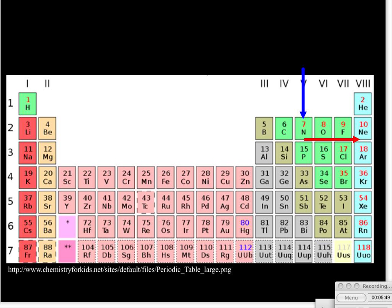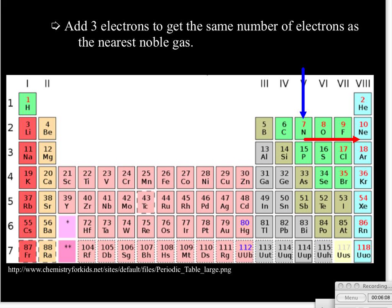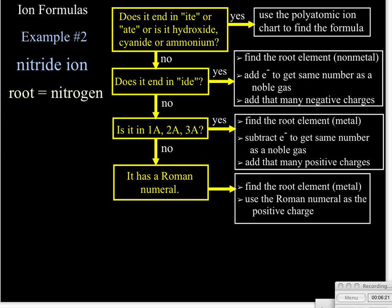So we know that as an atom, nitrogen has 7 protons and it has 7 electrons. In order to get the same number of electrons as neon, we have to go from 7 to 10. We have to add 3 electrons to get the same number of electrons as the nearest noble gas. Well, recall that electrons are negative, and so this is going to add a negative charge. Since there are 3 electrons, we're going to add 3 negative charges. So we go back and say, okay, we're going to take our nitrogen and add 3 negative charges to it. And that's our nitride ion.